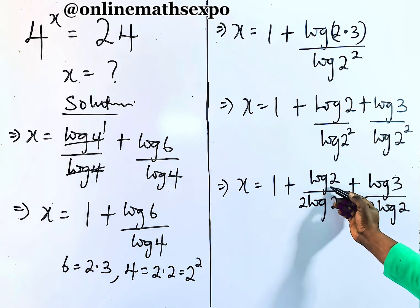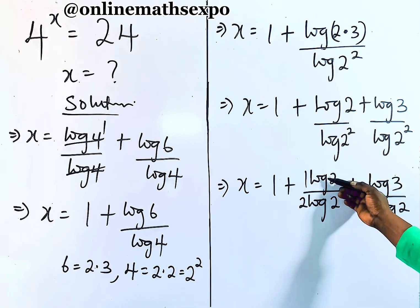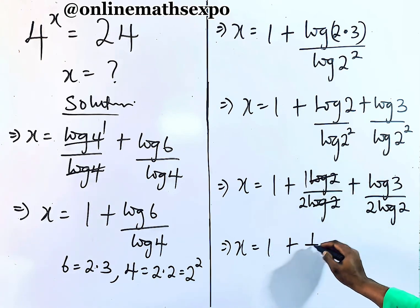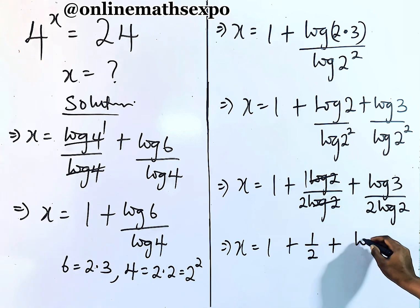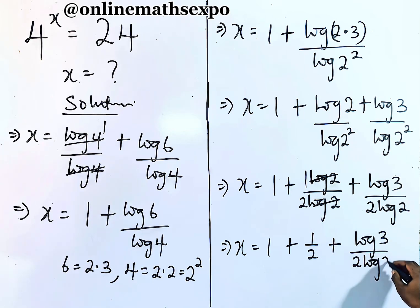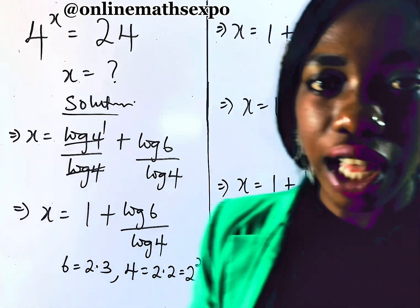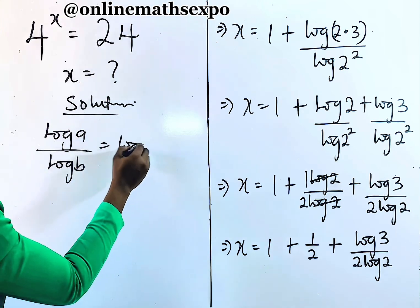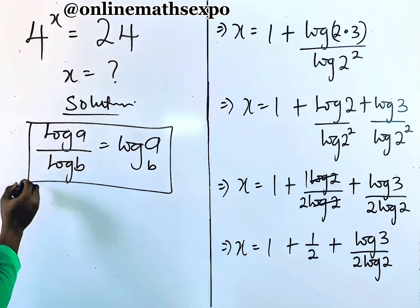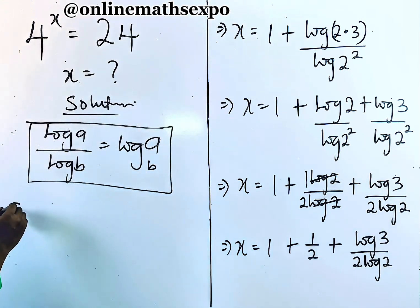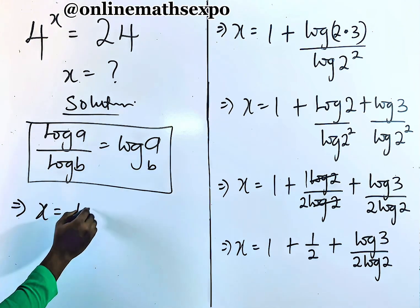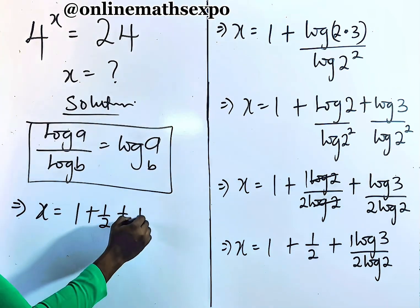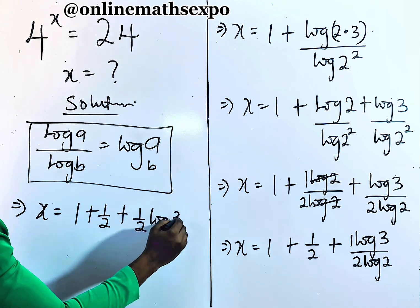The coefficient of log 2 in the numerator is 2, and the denominator also has 2·log 2, so 2·log 2 divided by 2·log 2 equals 1, giving x is equal to 1 plus one-half plus log 3 divided by 2·log 2. Now remember the change of base rule: for every log A divided by log B, it's always log A base B. So log 3 divided by 2·log 2 becomes one-half of log 3 base 2.